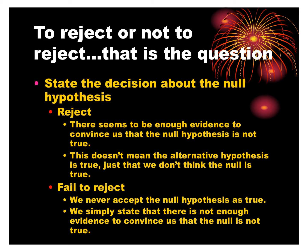We reject or we fail to reject — we state our decision about the null hypothesis. When we reject, there seems to be enough evidence to convince us the null hypothesis is not true. When we fail to reject, we never use the word 'accept.' We simply state there's not enough evidence to convince us the null is not true, because there's always sampling variation and there's always a chance we're wrong.